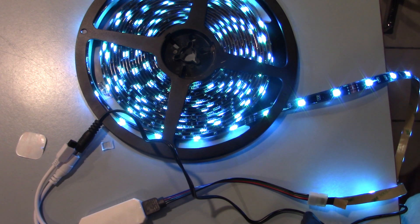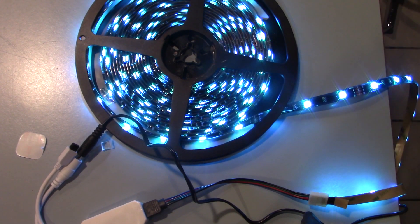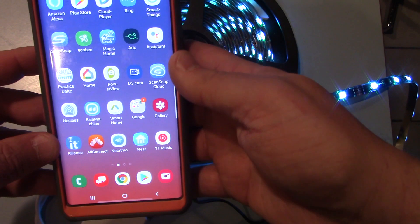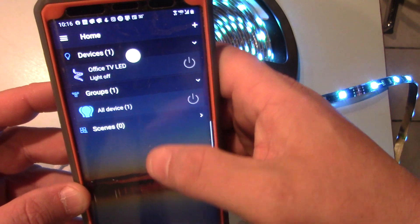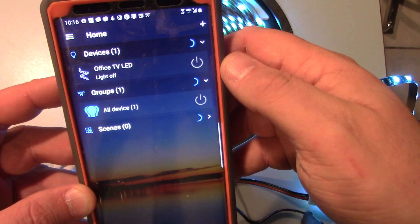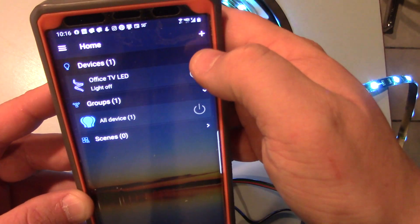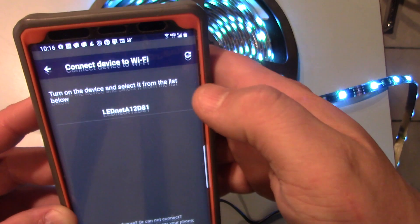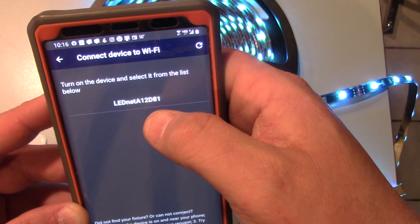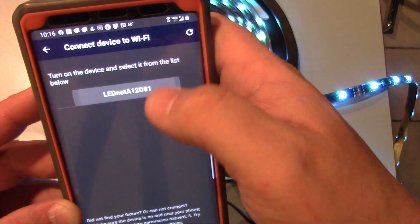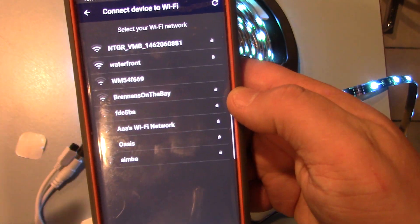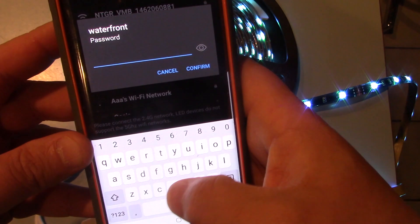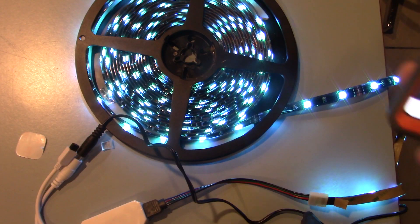We will also get into how to connect your mobile phone to pick up this device. So we will grab our mobile phone now. I've already downloaded the essential app that we need, and that is the Magic Home. You can see we already have one device here, and I have another device inside the garage. I want to hit the plus here and add a device. It's going to pick up the LED net A1 2D81, which is this device. I will click on it. It's connecting to that device now. It's going to ask me what network I want to connect to. I'm going to select my network and I'm going to put my password in.